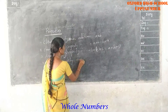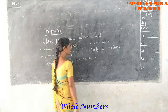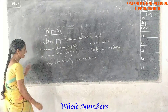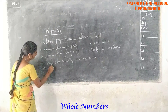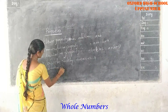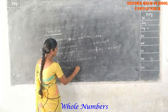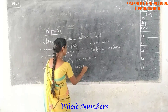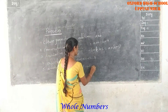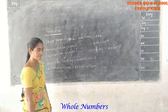Additive identity: A plus 0 is equal to 0 plus A, which is equal to A. Additive inverse: A plus (minus A) is equal to minus A plus A, which equals 0.